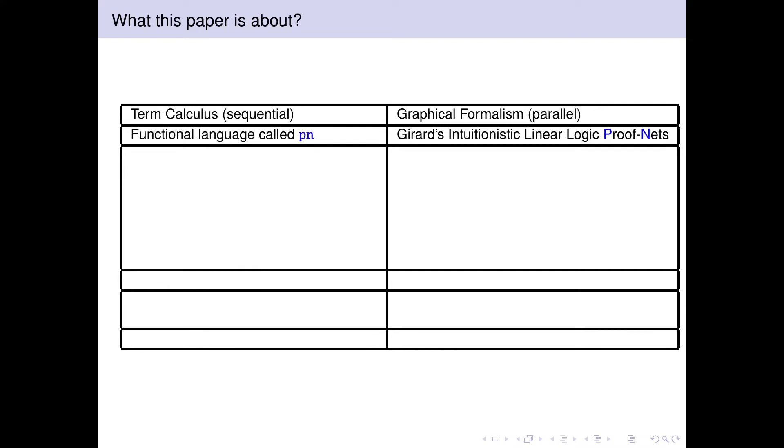How do the terms look in the term language? They are lambda terms with explicit substitutions, which are particular constructors of the language used to represent delayed substitutions, used to manage the resources of the term language in an explicit way, like in linear logic.